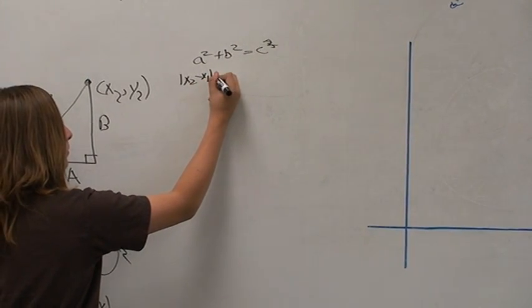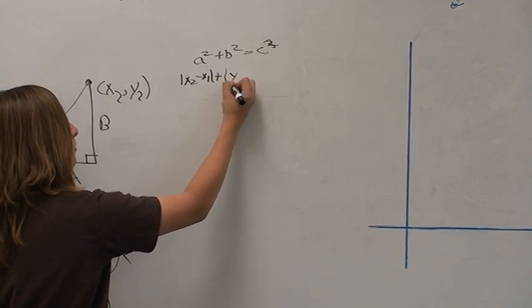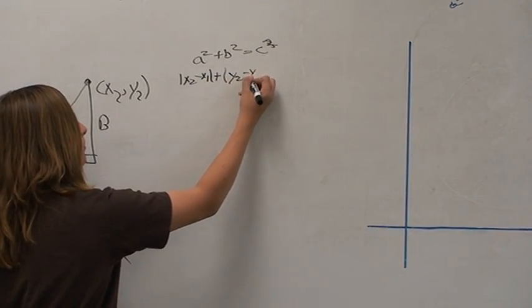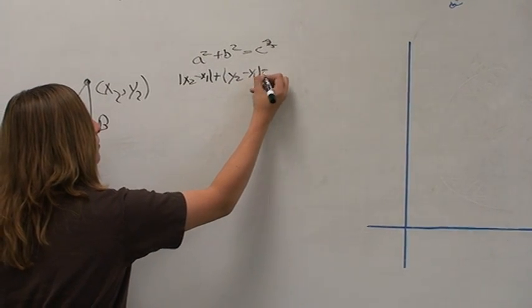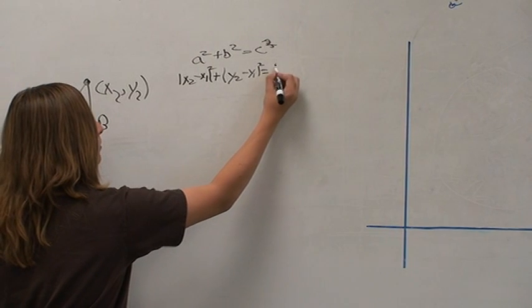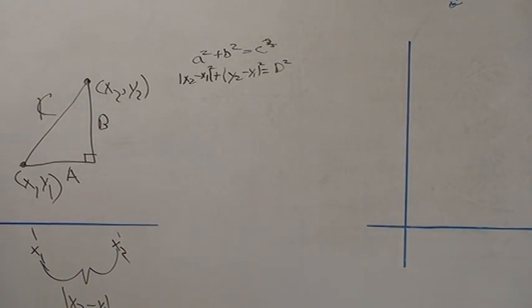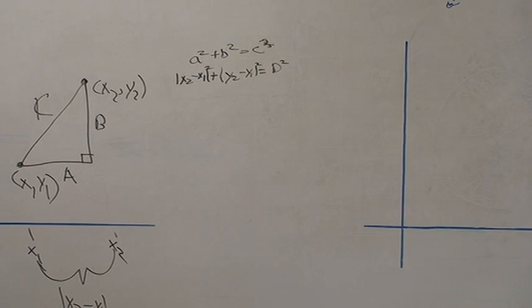A is the absolute values of the one dimensional distance. B is the absolute values of the y's. Let's not forget our squareds also. We're letting C equal the distance between the first and the second points.